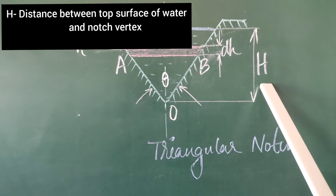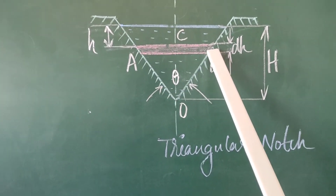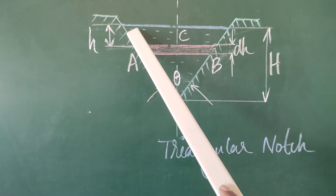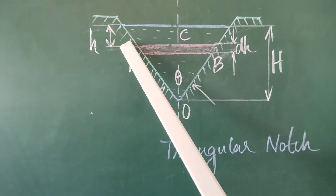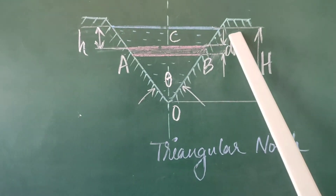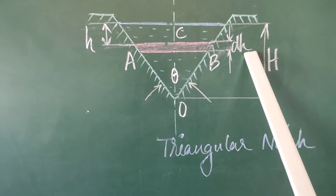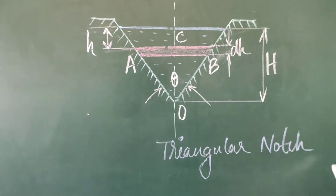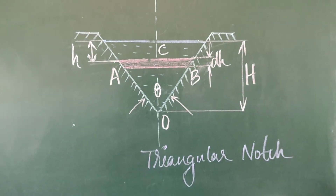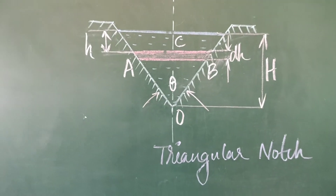In this figure, we have a thin strip. This strip is at a distance h from the top surface, and its thickness is dh. Now we are going to proceed with the derivation.